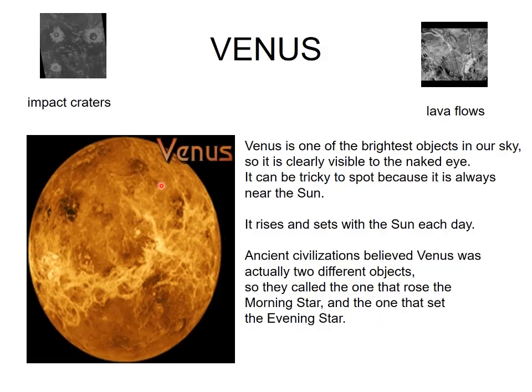As we can see it in the sky in both the morning and the evening, it got two names: one is the morning star and the other was the evening star. But it is amazing that it is actually one thing — a single brightly shining planet.